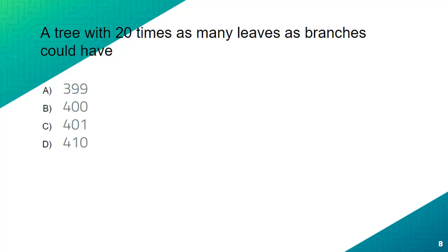The second question is: a tree with 20 times as many leaves as branches could have A) 399, B) 400, C) 401, D) 410. Put your answers in the comments below for both of these questions and I'll see you guys in the next video. Bye.